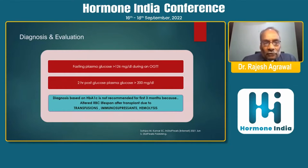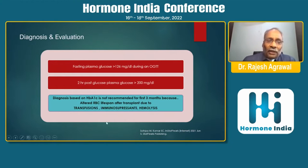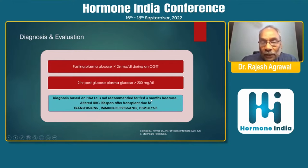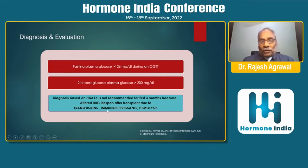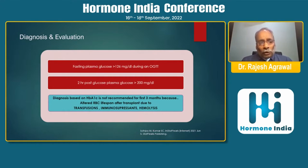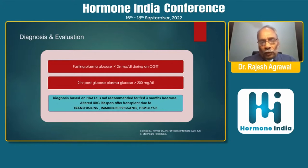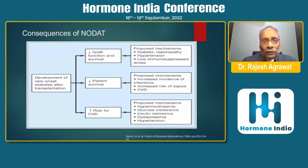To diagnose NODAT, fasting and post-meal plasma glucose should be taken into consideration. A word of caution about HbA1c — it is not recommended in the first three months after transplant because of altered RBC lifespan due to transfusions, immunosuppressants, and hemolysis. So do not rely only on HbA1c for diagnosing NODAT in the immediate post-transplant period.